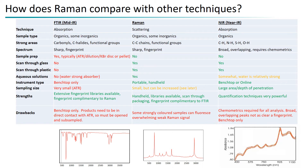For near-infrared, the biggest drawback is that chemometrics are required for most analysis. For material identification it is certainly feasible, but you often require more samples to build your library to get suitable results.